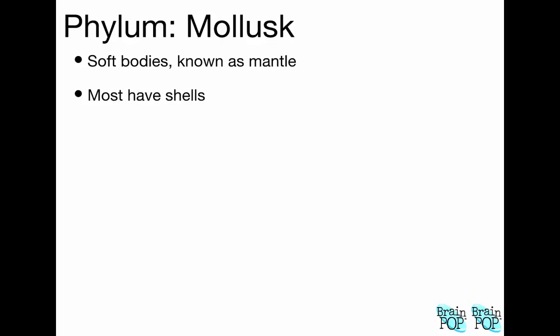The next group is mollusks. This is one you're familiar with, even if you don't realize it, because mollusks are often things people eat — like snails, clams. Mollusks are invertebrates that generally have soft bodies, but often they're inside a shell. Their body tissue is called a mantle, and they move around using that mantle or what is sometimes called the foot in clams and other bivalves. Most have shells, but not always.